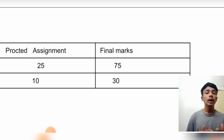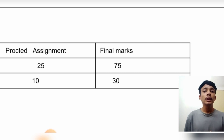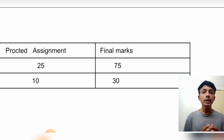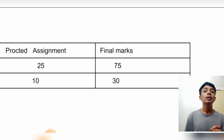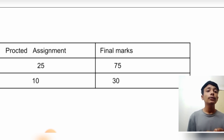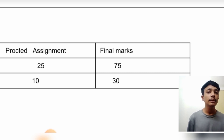The first topic is the types of examinations. There are two types: proctored examination and unproctored examination. In the proctored examination there are two components — assignments and final exam. Assignments carry 25 marks and the final exam carries 75 marks. In the 25 marks assignment you need to get at least 10 marks to pass, and in the 75 marks final exam you need to get at least 30 marks. If you get only 9 in assignments or only 29 in the final exam, you cannot pass.